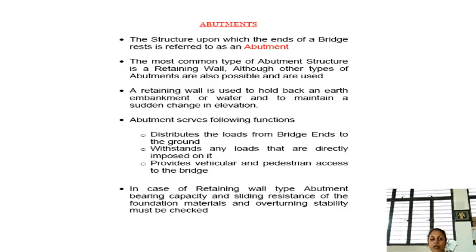Continuing with the abutments — an abutment is a structure upon which the ends of a bridge rest. The most common type of abutment structure is a retaining wall, although other types are also possible and used. A retaining wall is used to hold back an earth abutment or water and to maintain a sudden change in elevation.